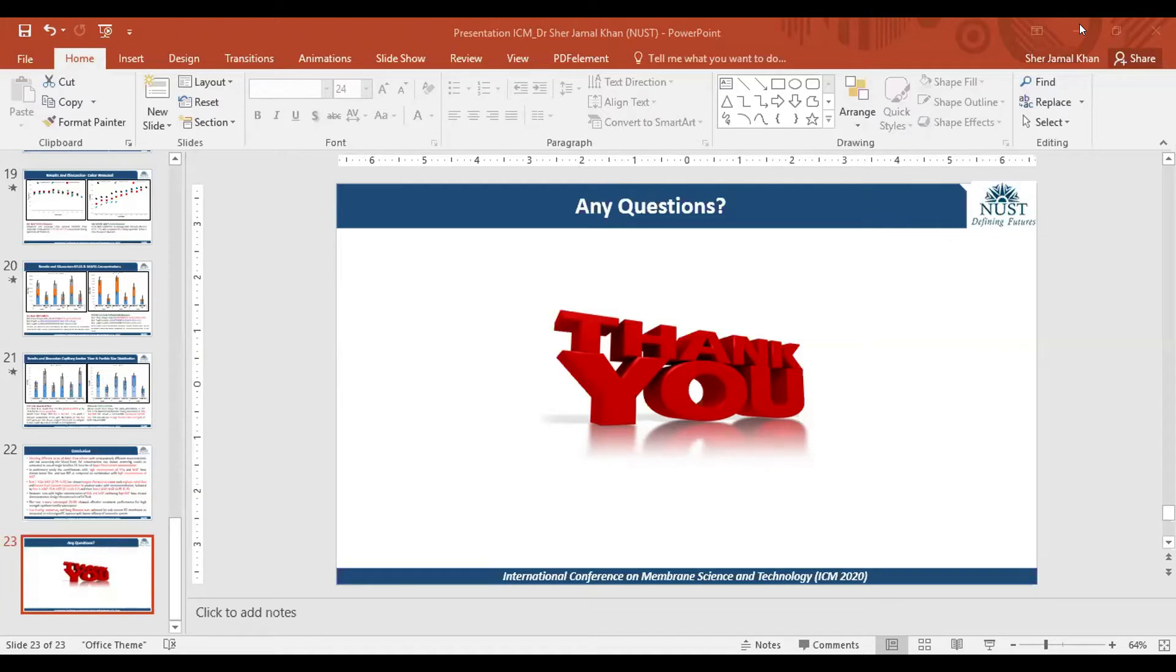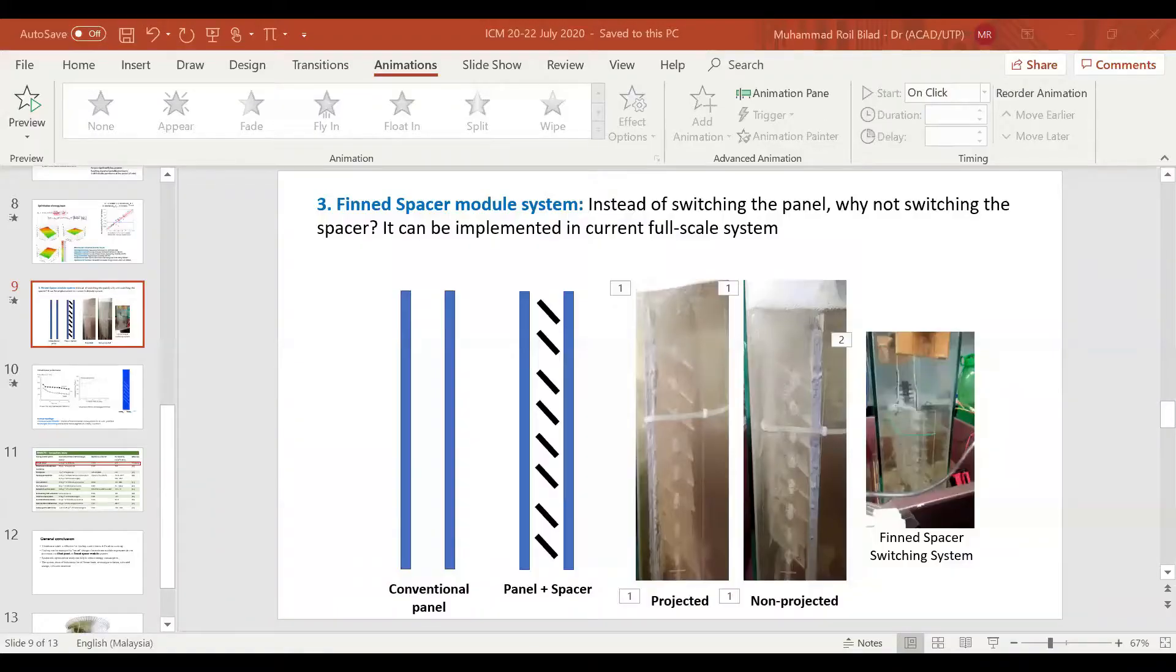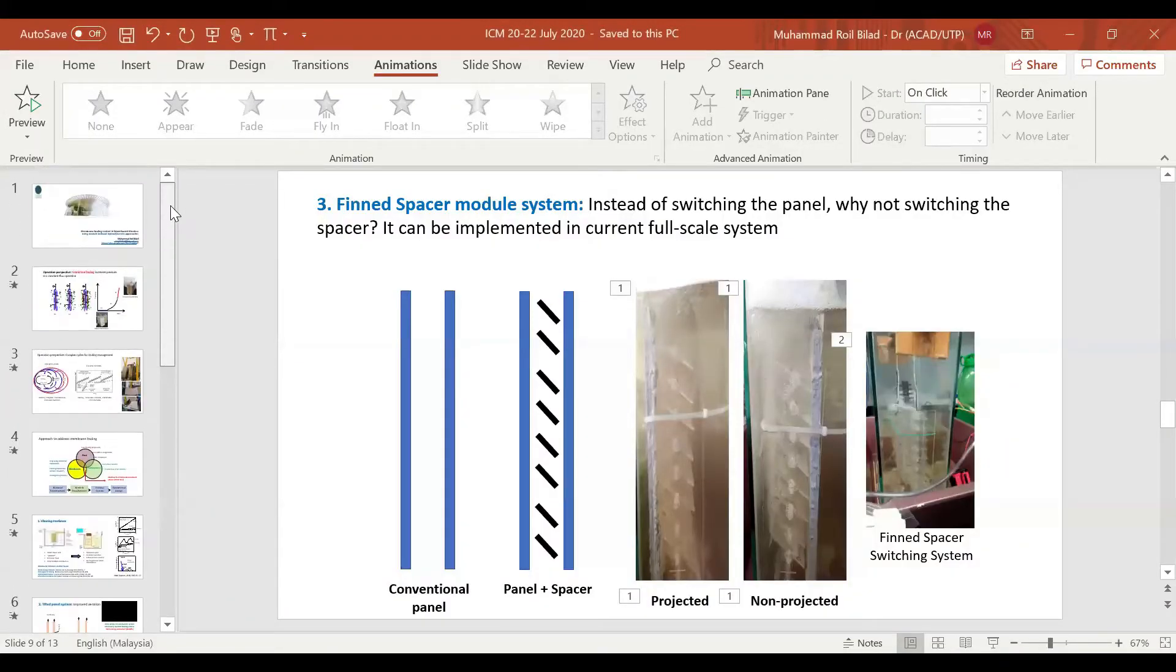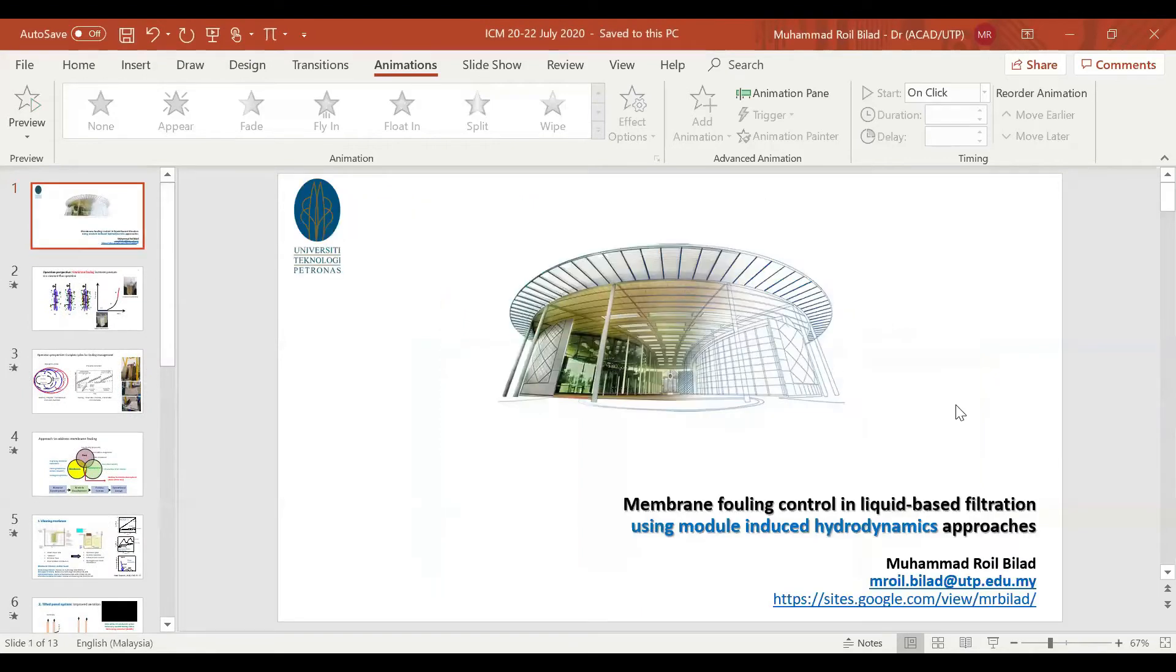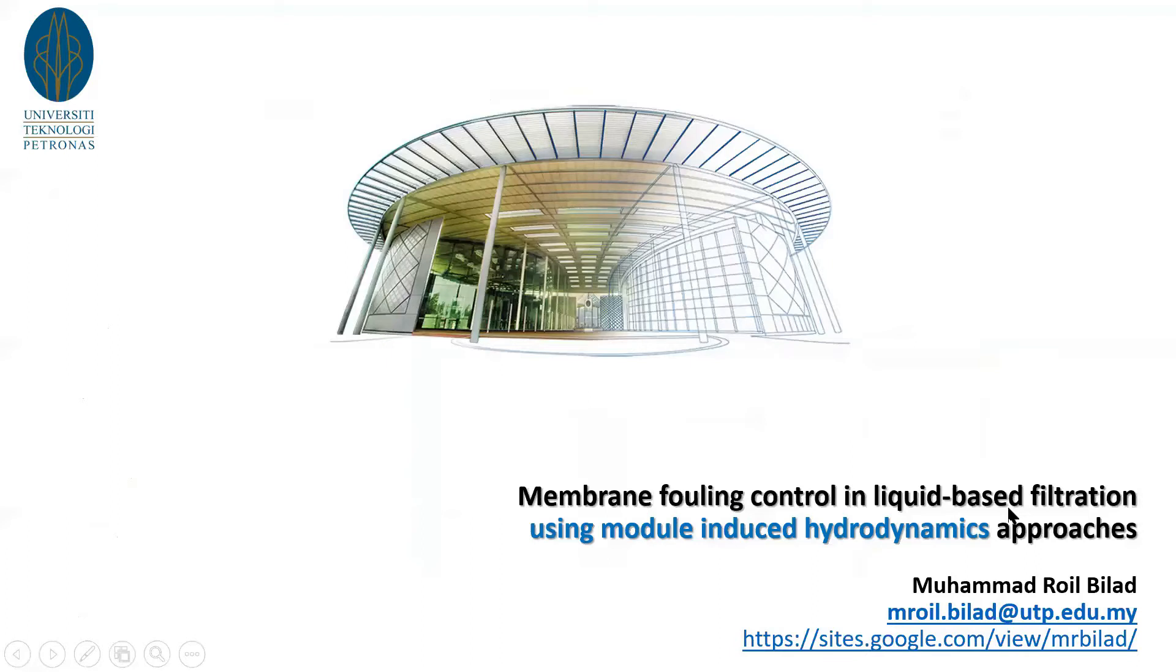Dr. Bilad has a strong research portfolio on membrane science and technology, as demonstrated by the number of funding and research outputs. He has three EPO patents and more than 100 ISI and Scopus journals. The good track record was developed through experience as a working researcher in KU Leuven, Masdar Institute, and NTU.